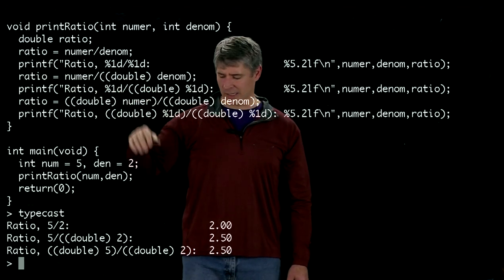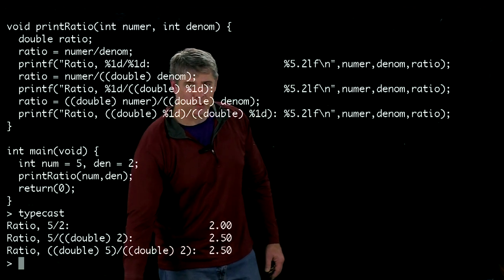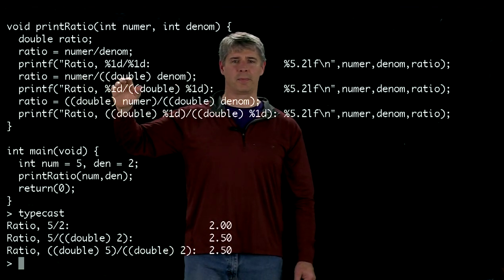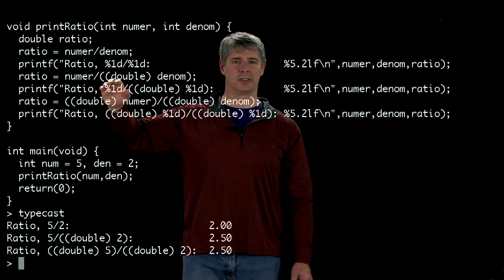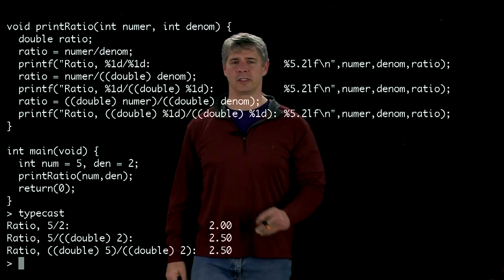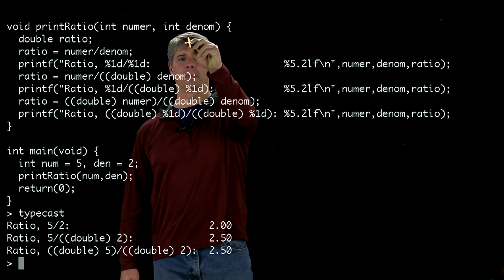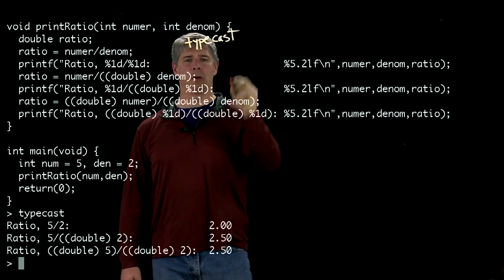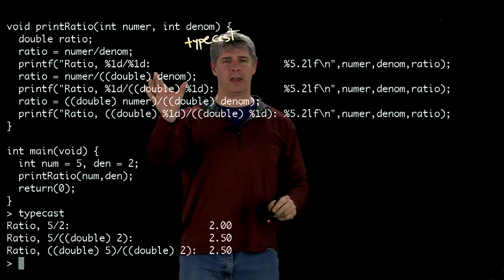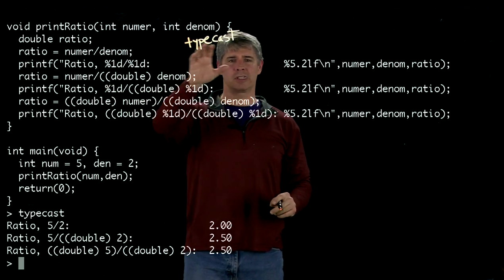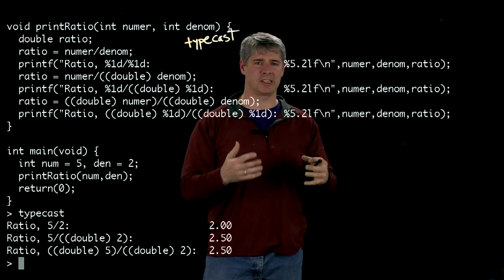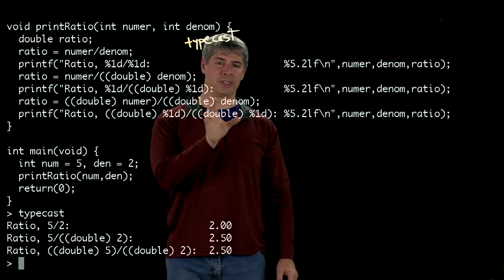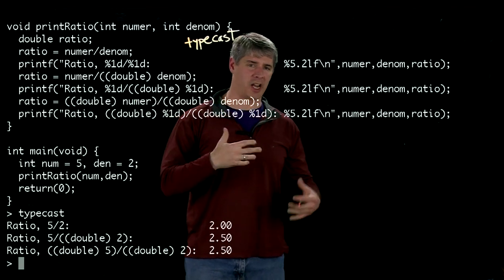If you go down to this next line, you can see we're dividing by something that says double denominator - that's called a typecast. We are casting this variable denom as type double, changing the type from integer to double. Now, denom itself doesn't change, it's still integer, but the thing inside the parentheses here is now a double.